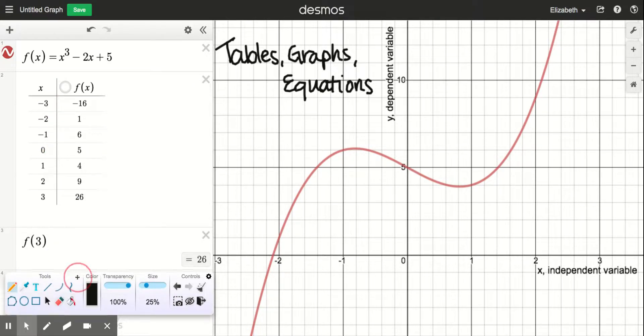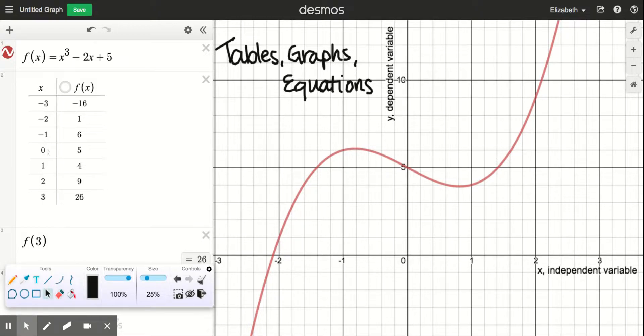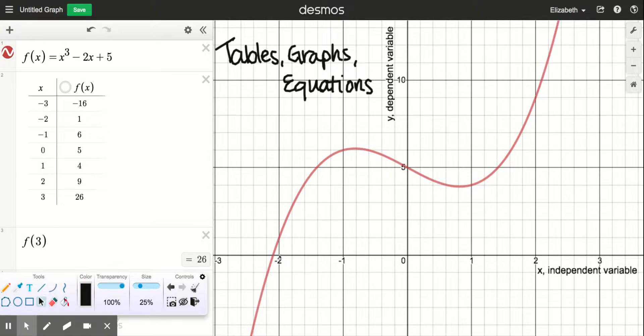Now, in this case, it's clear that this table only gave us seven inputs and outputs. What the graph does is show you all of them. There's infinitely many.